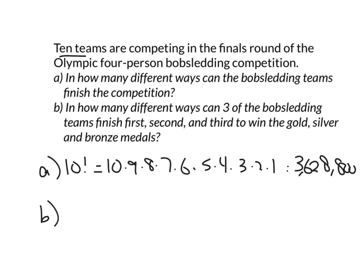Part B is a little different. In how many different ways can three of the bobsledding teams finish first, second, and third to win the gold, silver, and bronze? In the Olympics that's really all they care about - first, second, third. There are 10 teams competing and we want the top three, so we're counting how many different ways three out of ten can finish. This is still a permutation, but it works a bit differently because you're not arranging all of them.